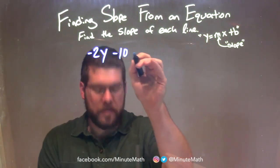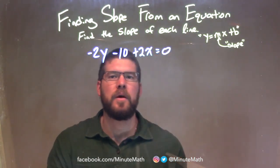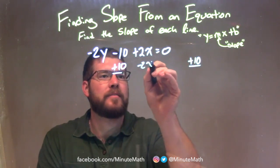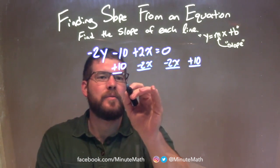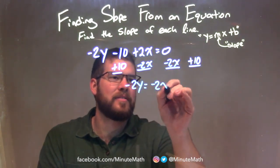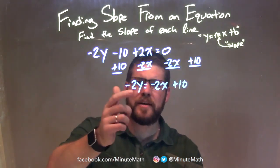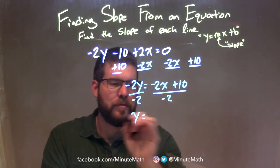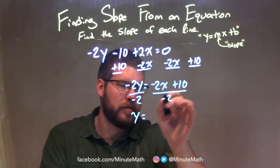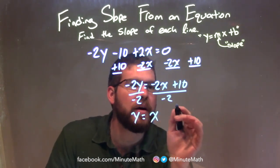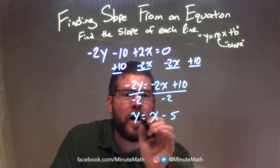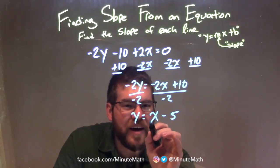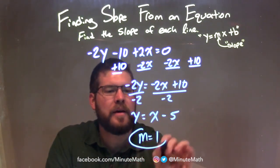Negative 2y minus 10 plus 2x equals 0. I need to isolate y. To do that, I add 10 to both sides and subtract 2x from both sides — doing both steps at once. That leaves me with negative 2y on the left, and negative 2x plus 10 on the right. Now to get y by itself, I divide both sides by negative 2. Distributing: negative 2x divided by negative 2 is positive 1, so just x. And 10 divided by negative 2 is negative 5. So y equals x minus 5. This is slope-intercept form. The m value — the coefficient for x — is just 1. So m equals positive 1. That is our final answer.